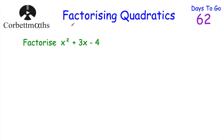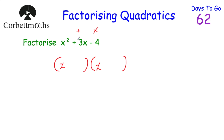Our next question says to factorise x squared plus 3x minus 4. Feel free to pause the video and give this one a shot. So we have our two brackets, and because it's x squared we have x at the front of each bracket. We want two numbers which multiply together to give negative 4 and add together to give 3. I'm thinking negative 1 and 4, because negative 1 times 4 is negative 4, and negative 1 plus 4 is 3. So the answer is x minus 1 times x plus 4.